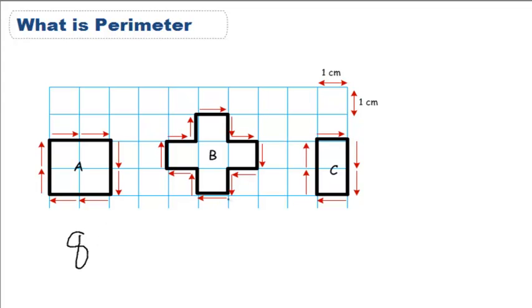For B, it goes 1, 2, 3, 4, 5, 6, 7, 8, 9, 10, 11, 12. For B, it's 12.